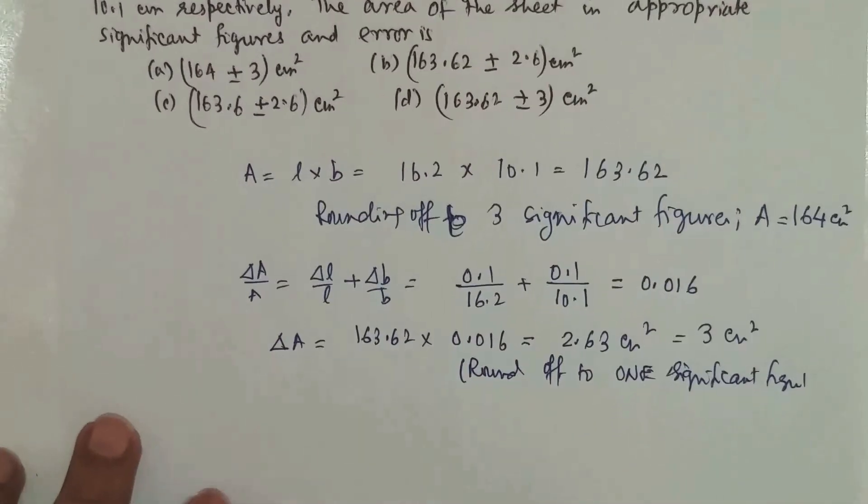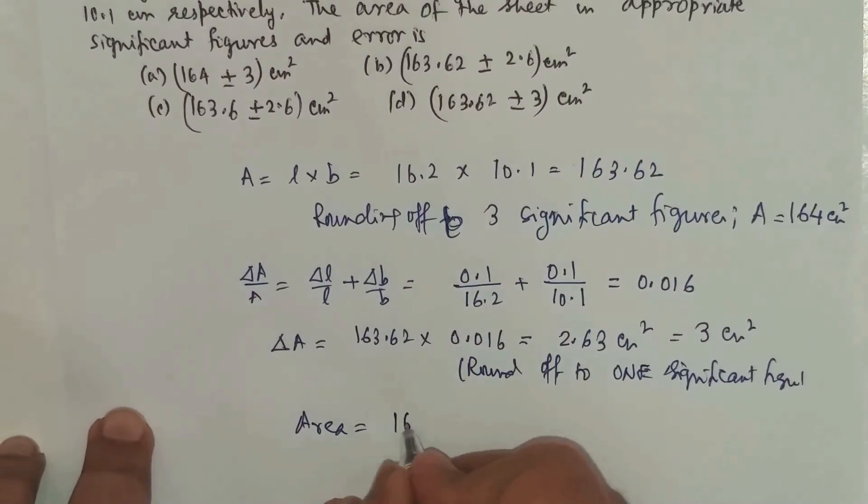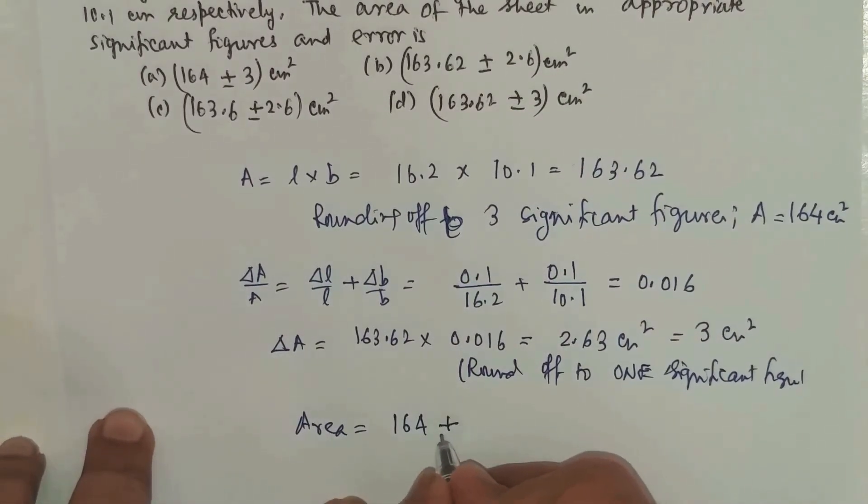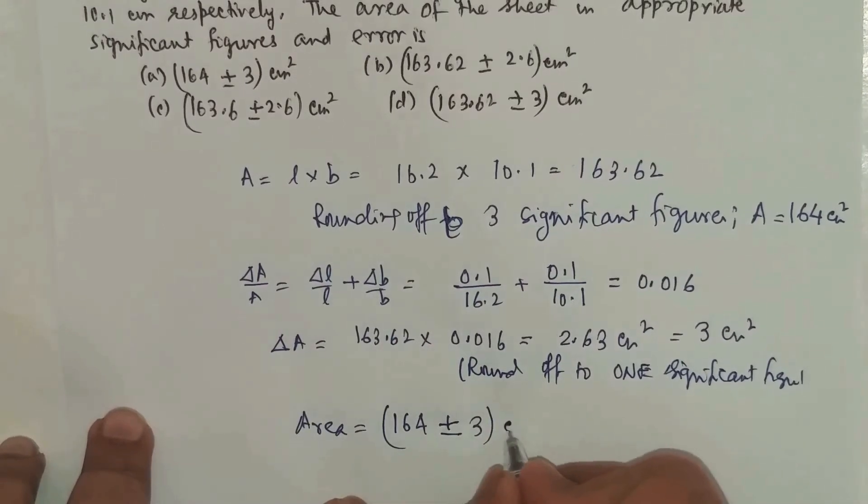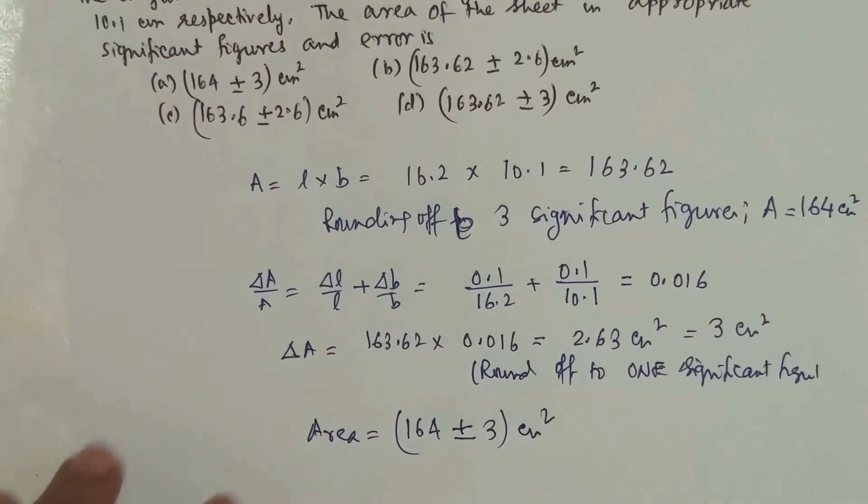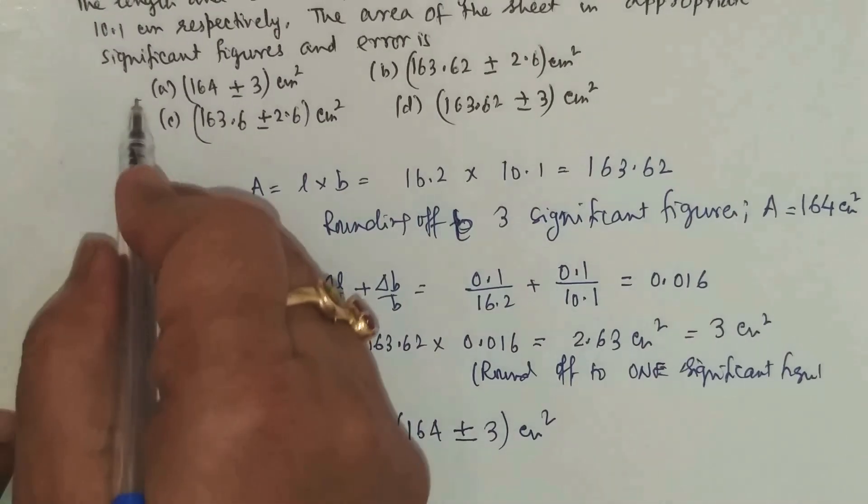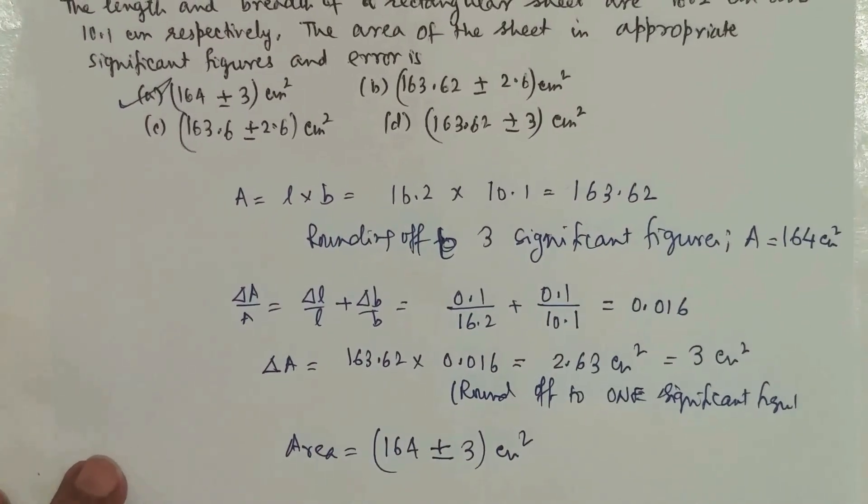So now the final result. The area will be equal to 164 ± 3 cm². That would be the appropriate result. Looking at the options, the first option seems to be correct.